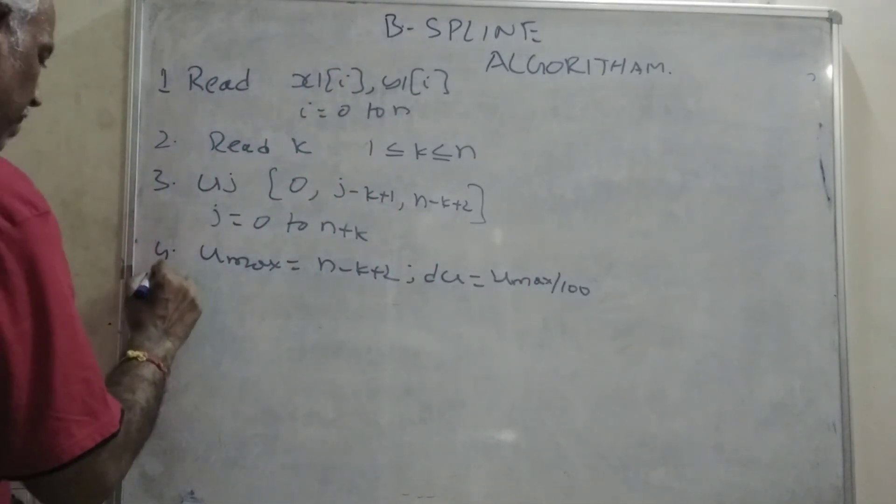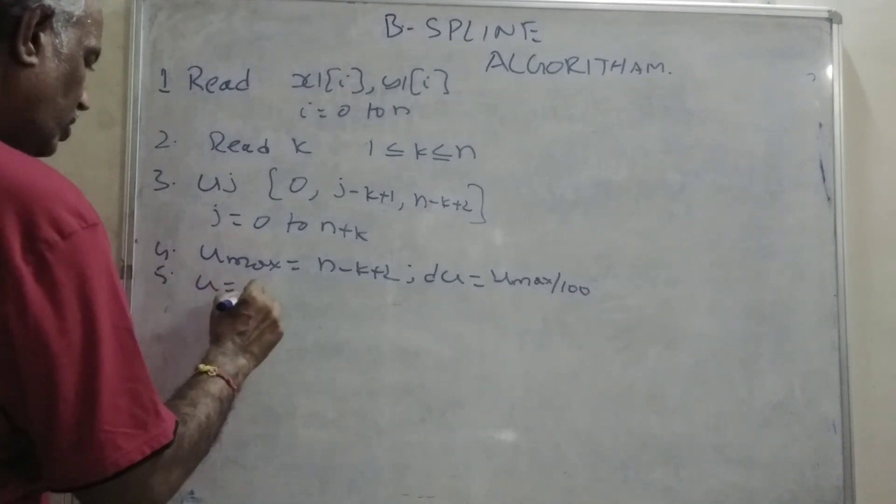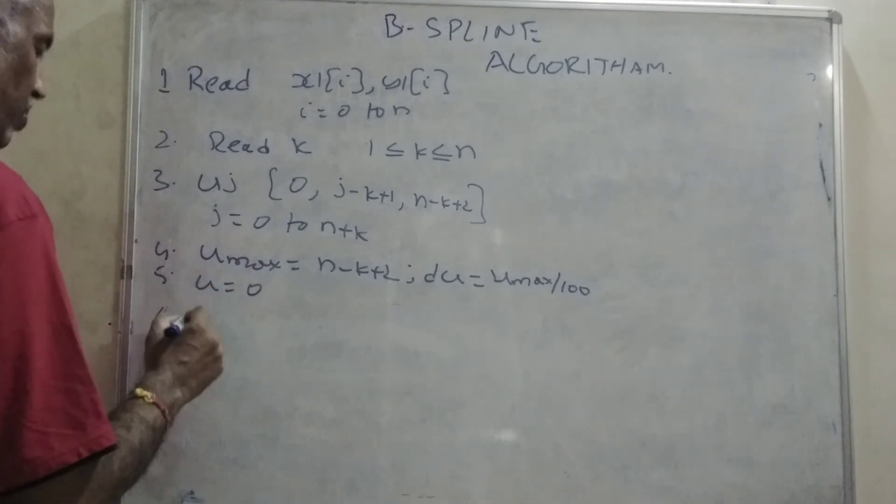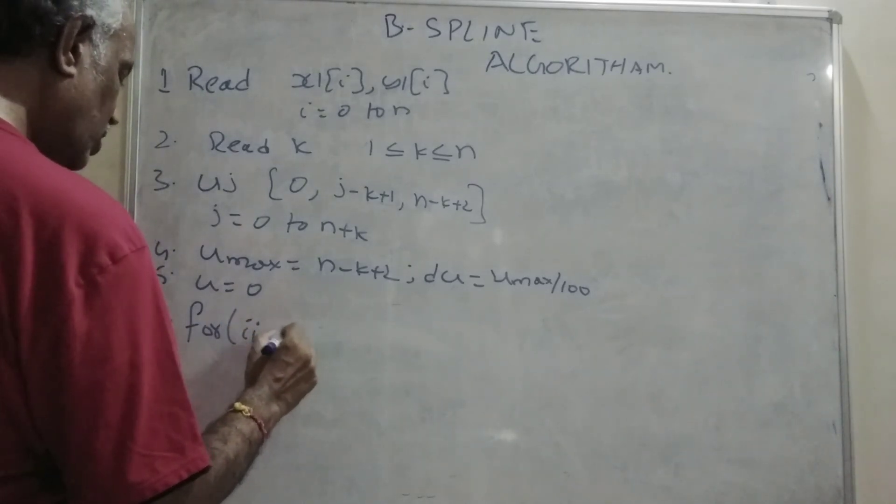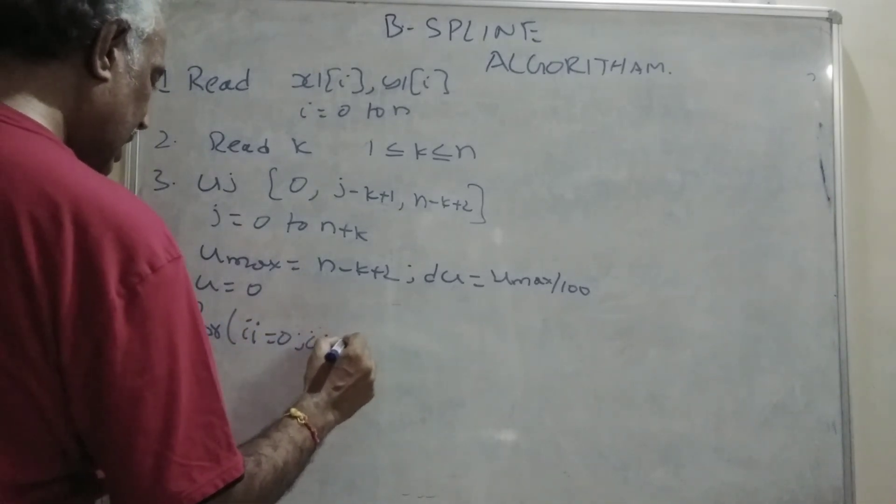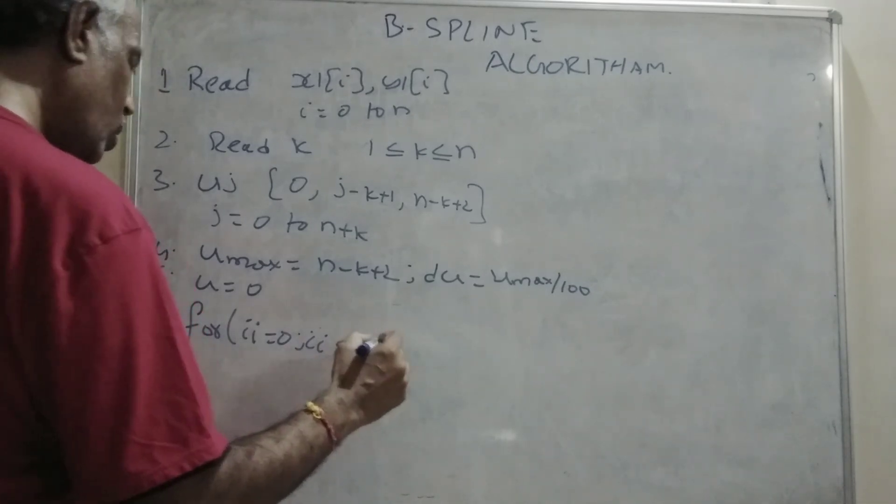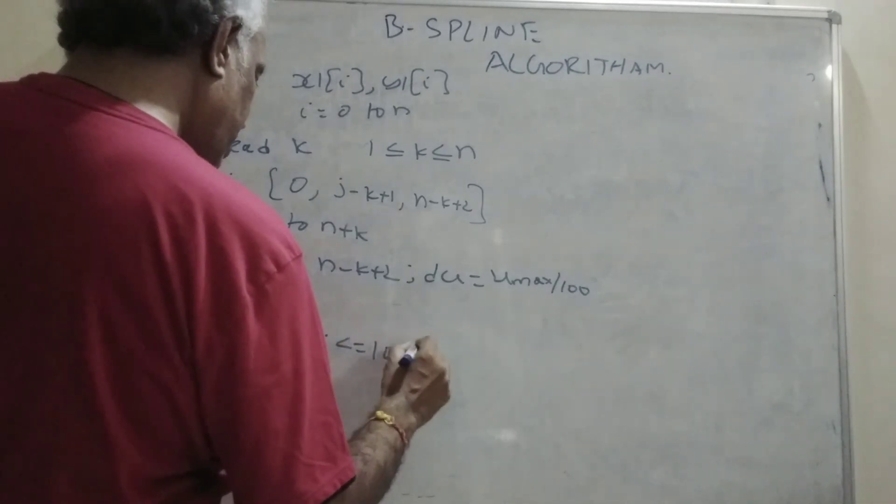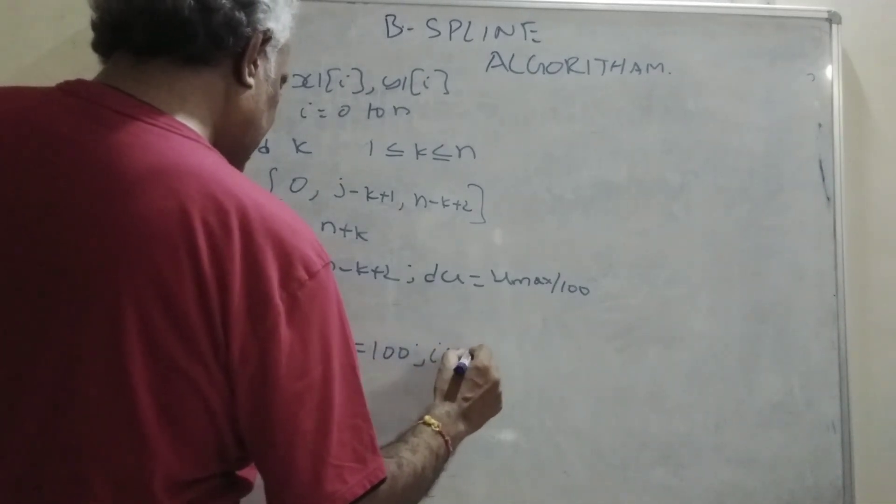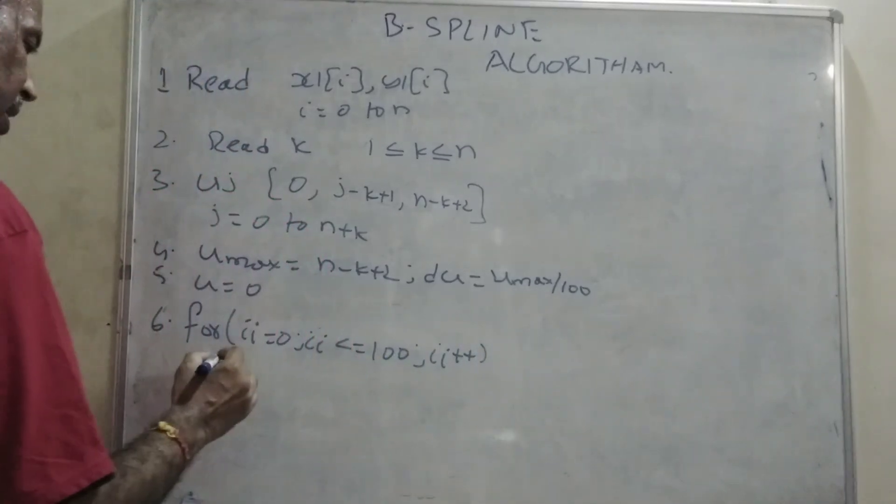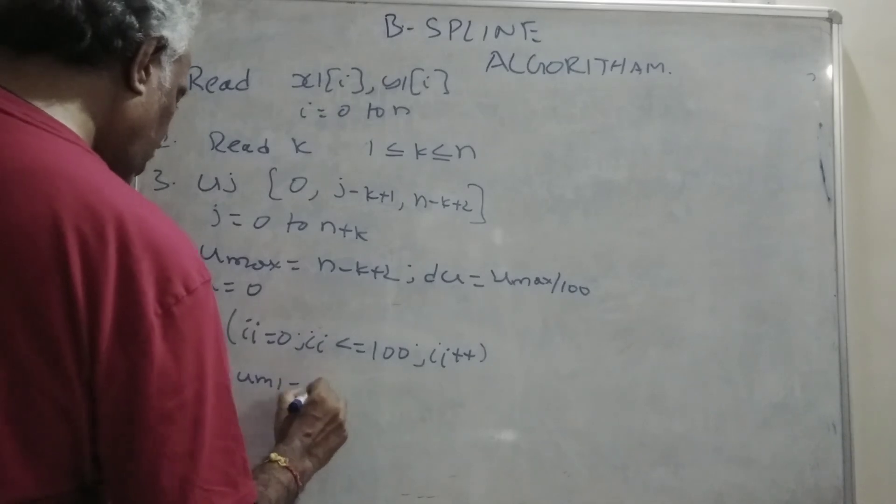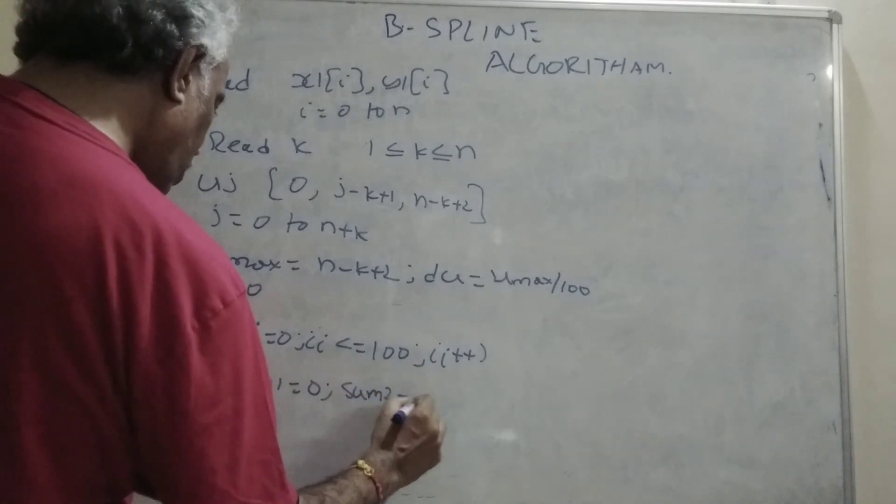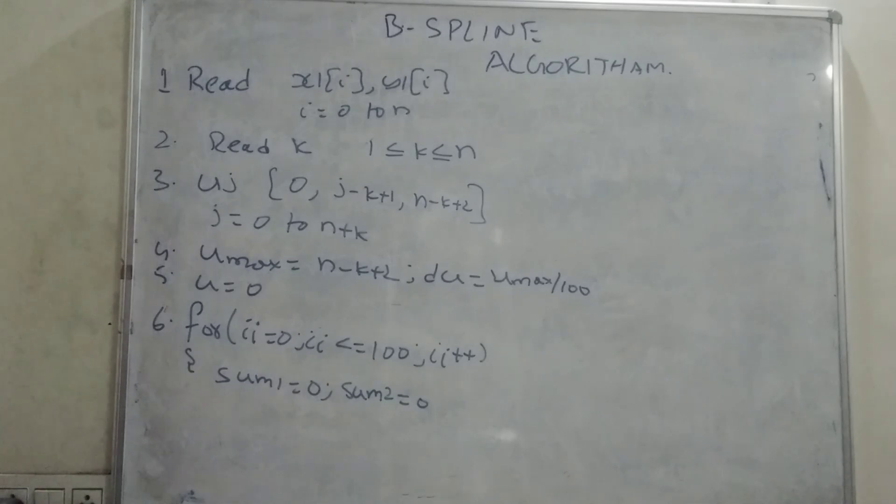Now here, I am assigning u is equal to 0. Next, we are having two loops. In the first loop, for ii is equal to 0, ii less than or equal to 100, ii plus plus. Now here, you are trying to define two variables, sum 1 is equal to 0, sum 2 is equal to 0.